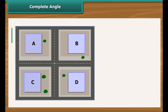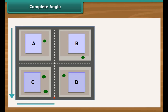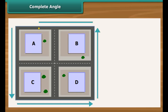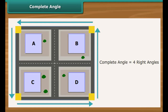Complete angle: Looking at the first route again — Rajiv jogs from pocket A to C to D to B and then back to A. In a single round he covers 4 right angles. In other words, he covers a complete angle of 360 degrees.